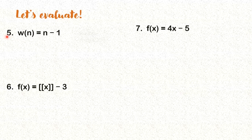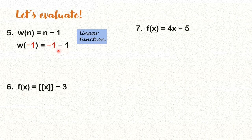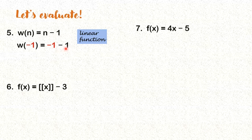Number 5 is again a linear function. What is the value of W of negative 1? We replace N here by negative 1. So what is negative 1 minus 1? Kapag pareho ng sign — parao silang negative — you simply add them. What is 1 plus 1? 2. And then you copy the sign. It's negative. So the answer is negative 2.